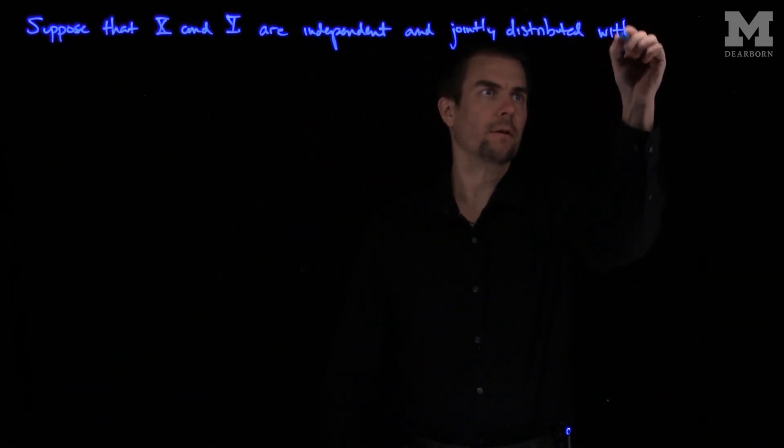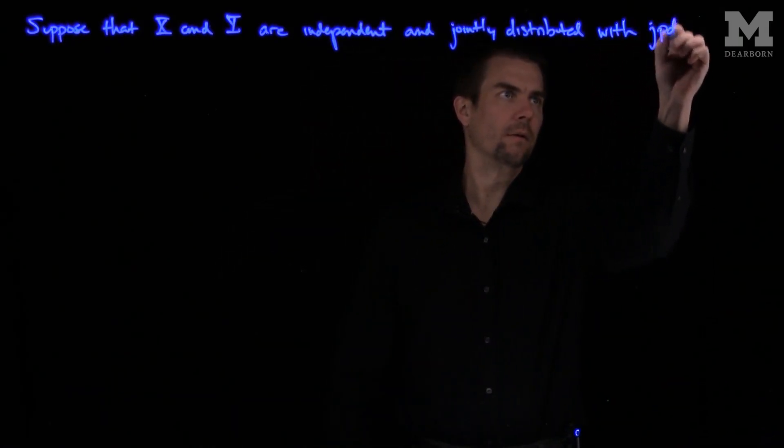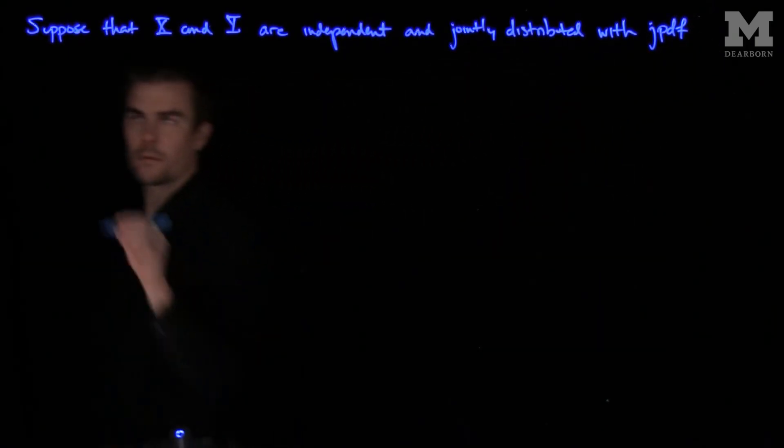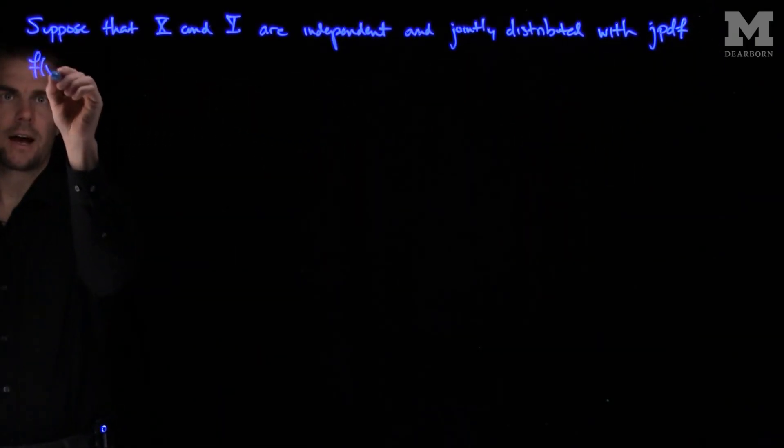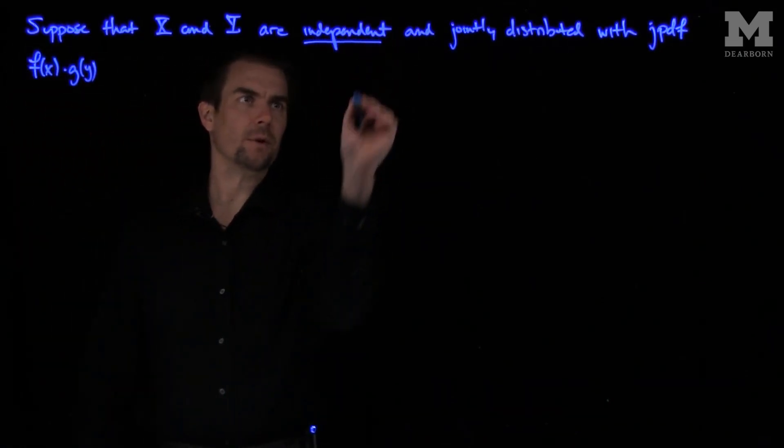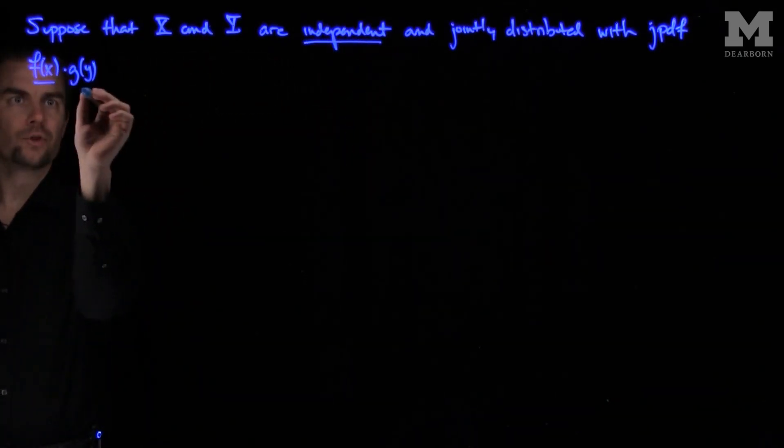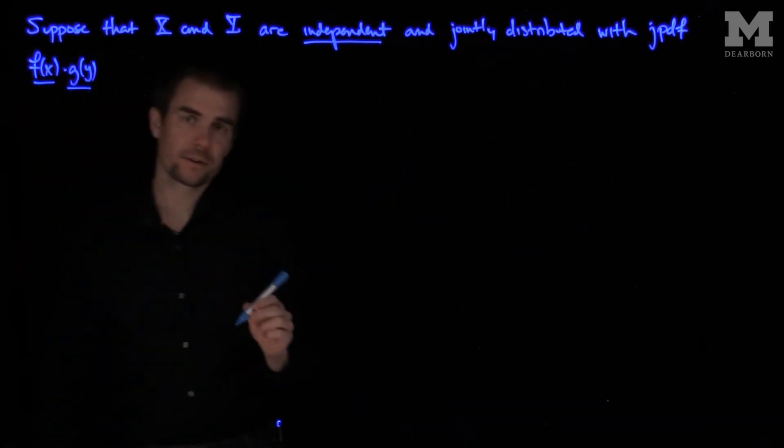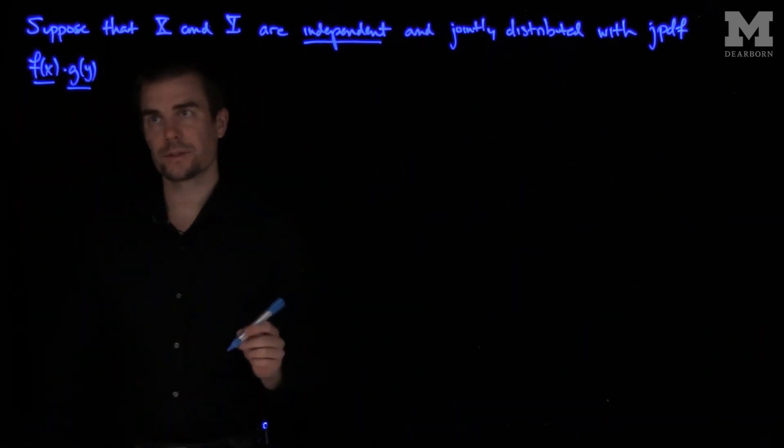With joint PDF f of x times g of y, and we recall that since the random variables are independent, their joint probability density function is the product of their individual probability density functions.